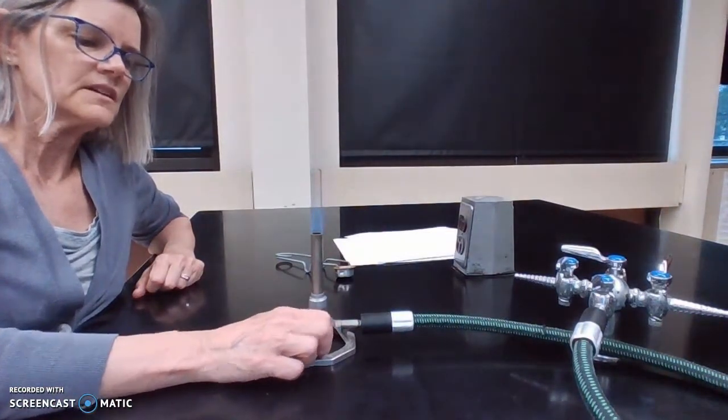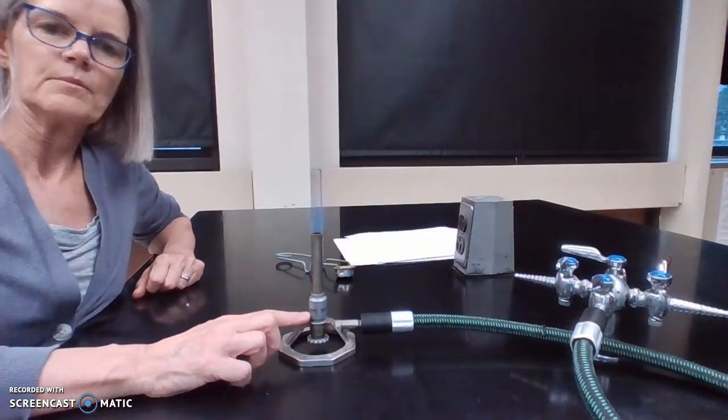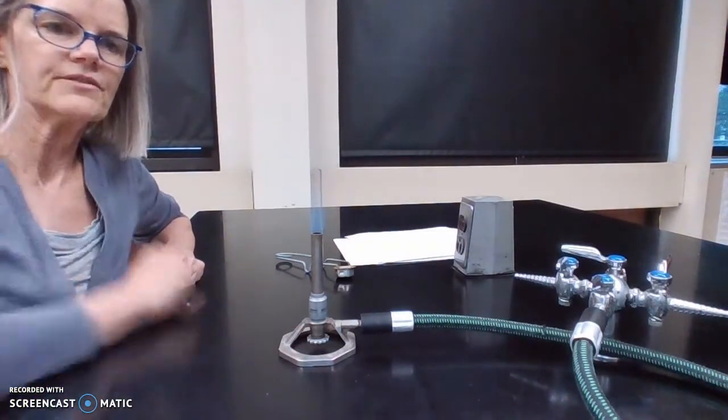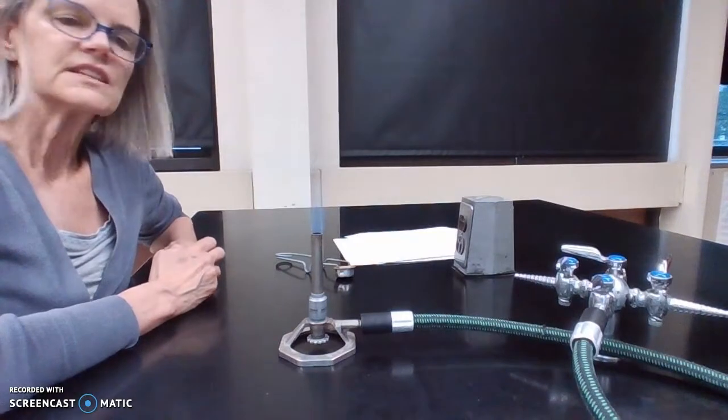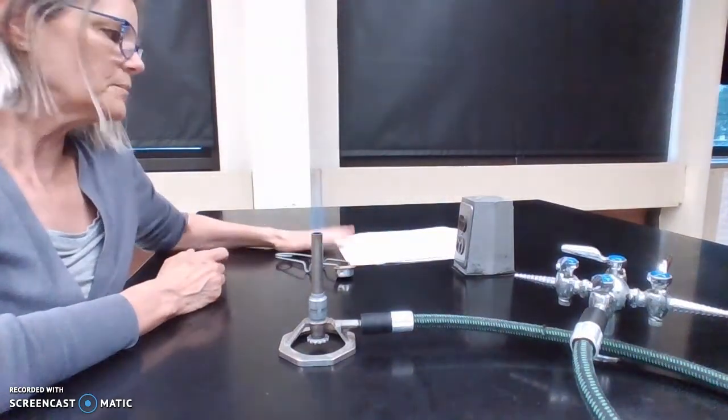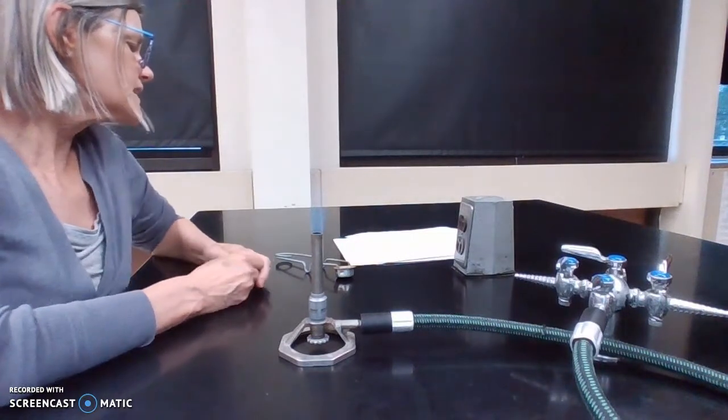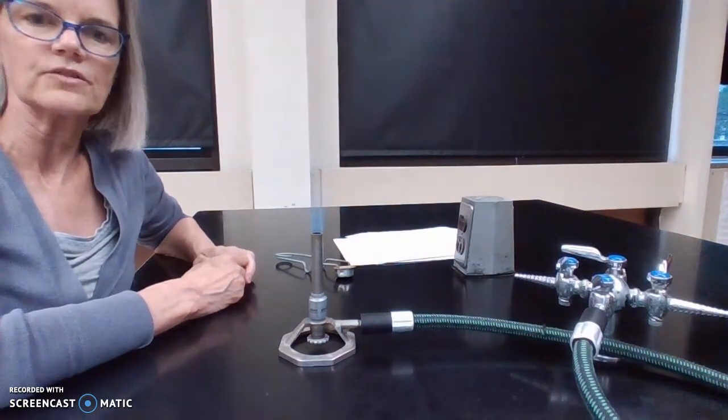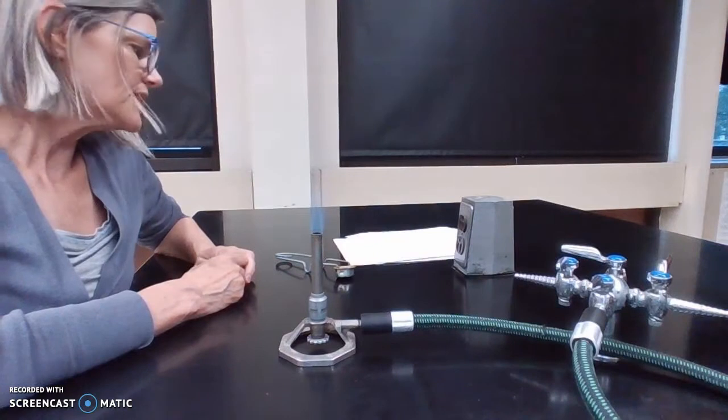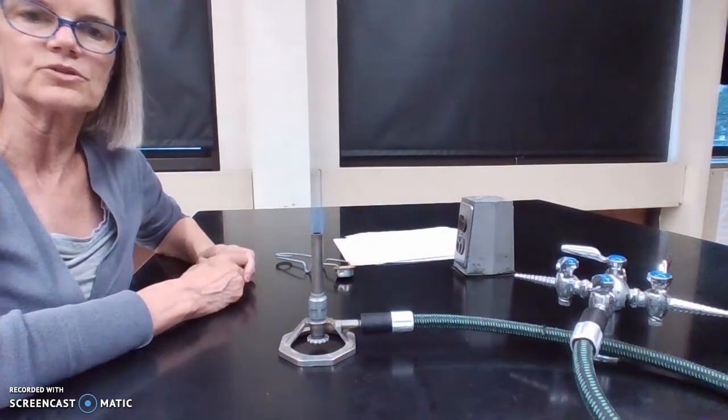So balance the needle valve and the air port to get the right height of the flame and the right quality of the flame. There's a table associated with the lab book on the Bunsen burner, and it asks you just that. What's going to happen if the needle valve is open too much or if it's closed too much? What happens if the air port is open too much or closed too much?